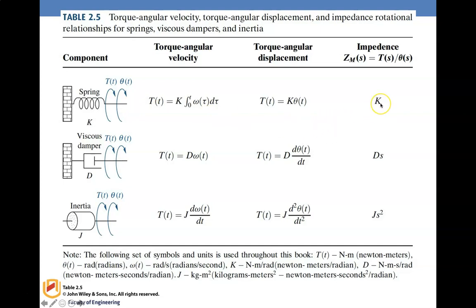For the viscous damper, the torque-angular displacement relationship involves the viscous damping coefficient D times d-theta/dt, which equals D times omega. Taking the Laplace transform gives D·s·theta, so D·s becomes the impedance.